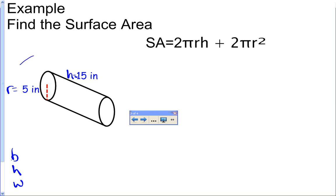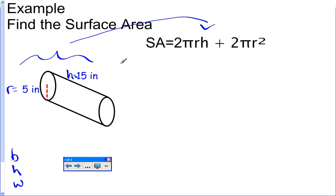So now all we're going to do is take these two values and plug them into this formula. Surface area equals 2 times pi, we're going to use 3.14, times the radius, which is 5, times the height, which is 15. So all I did was plug in 5 for r, 15 for h, and I replaced pi with 3.14.